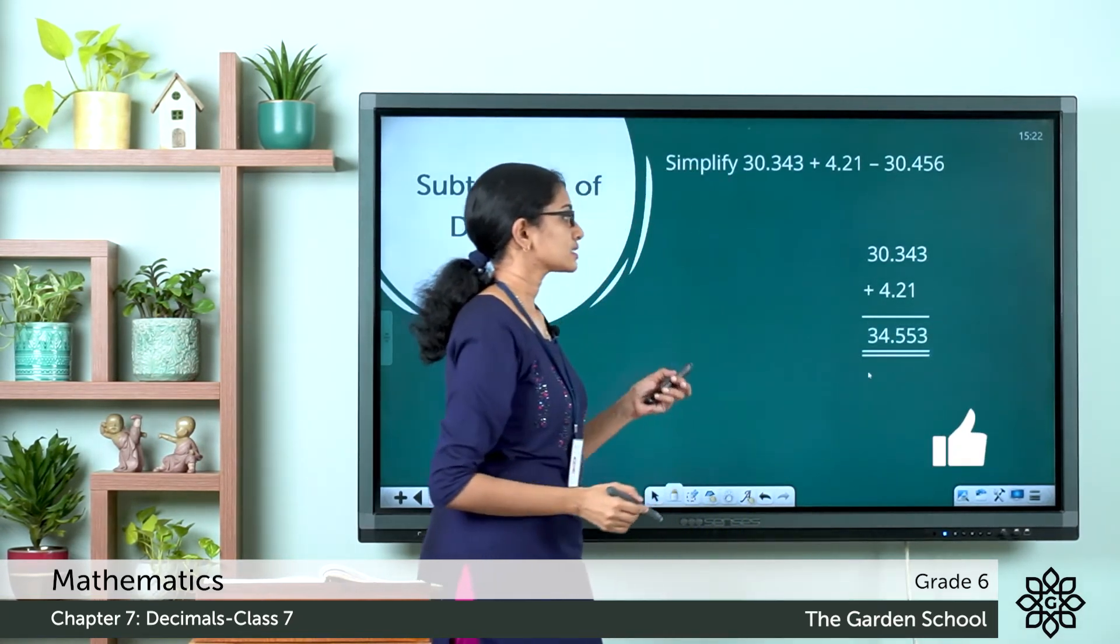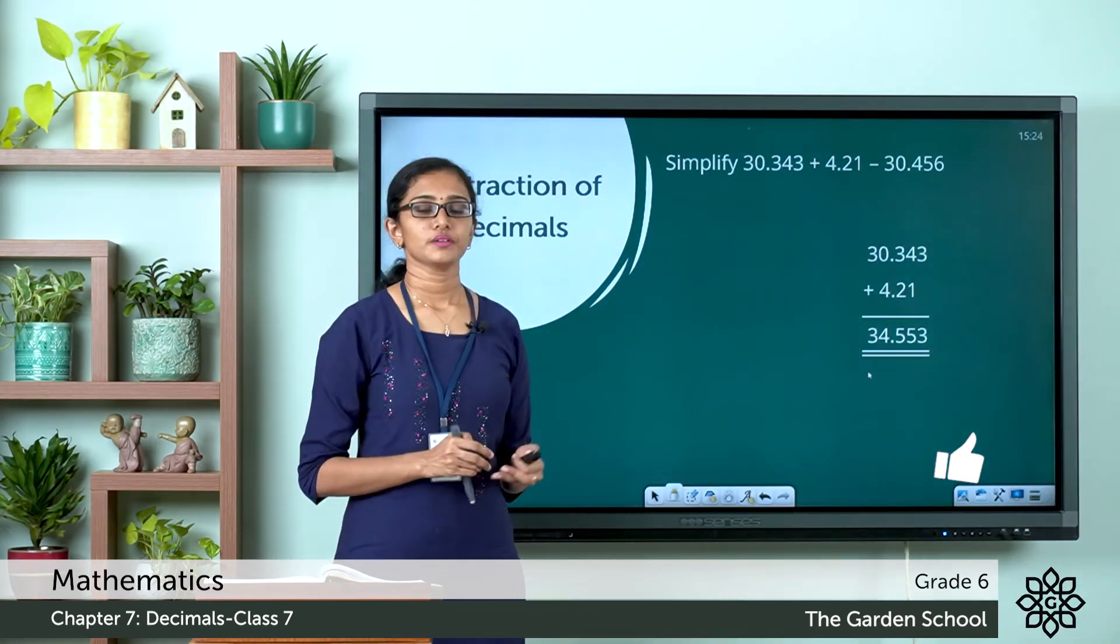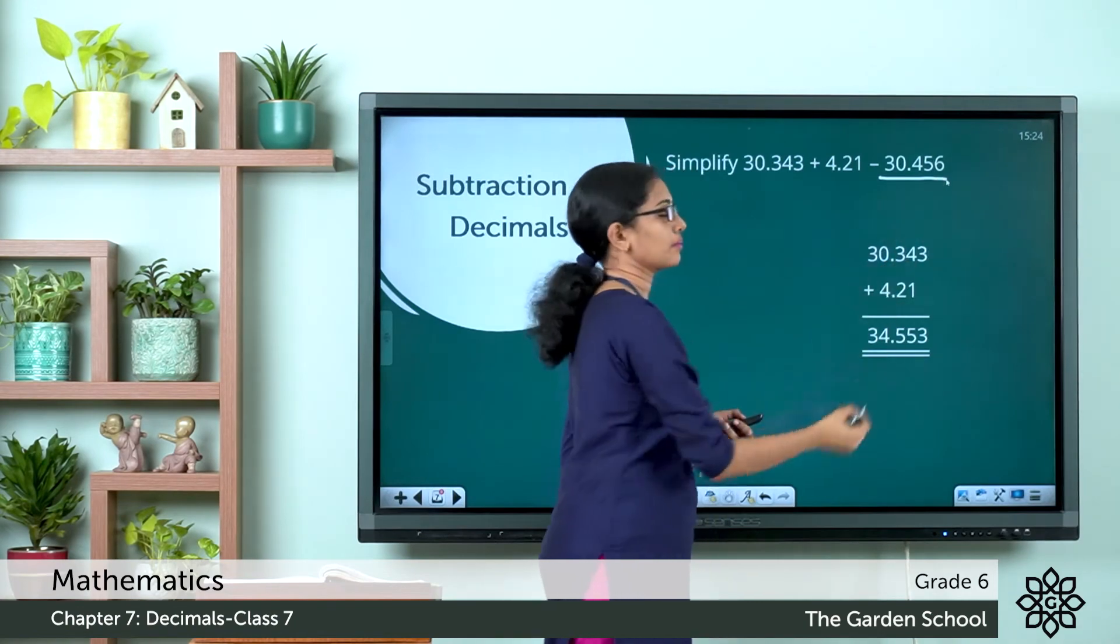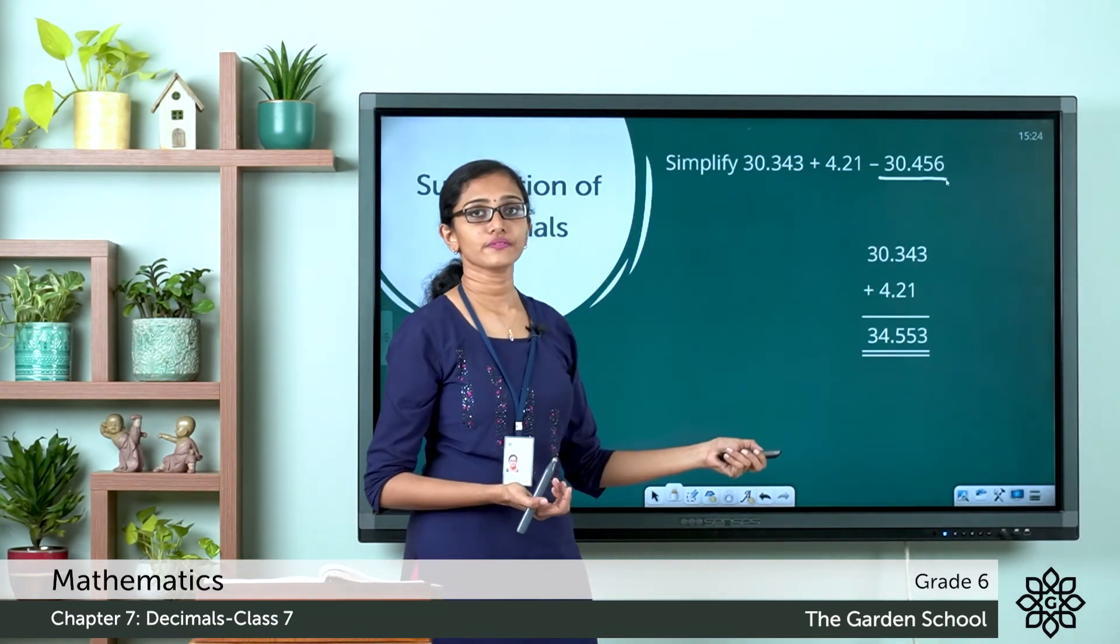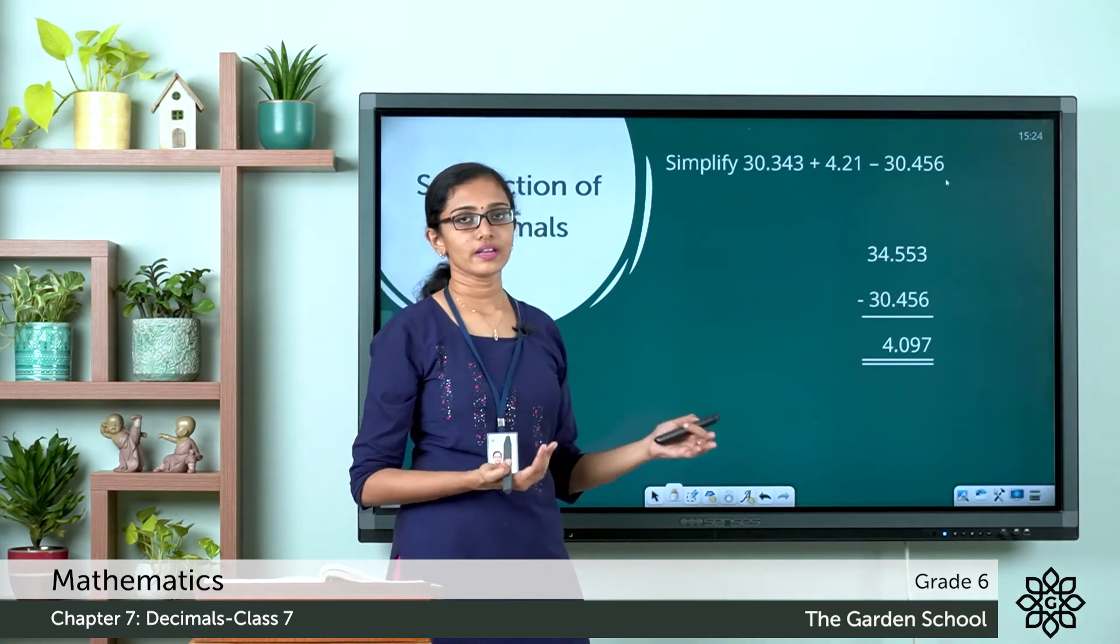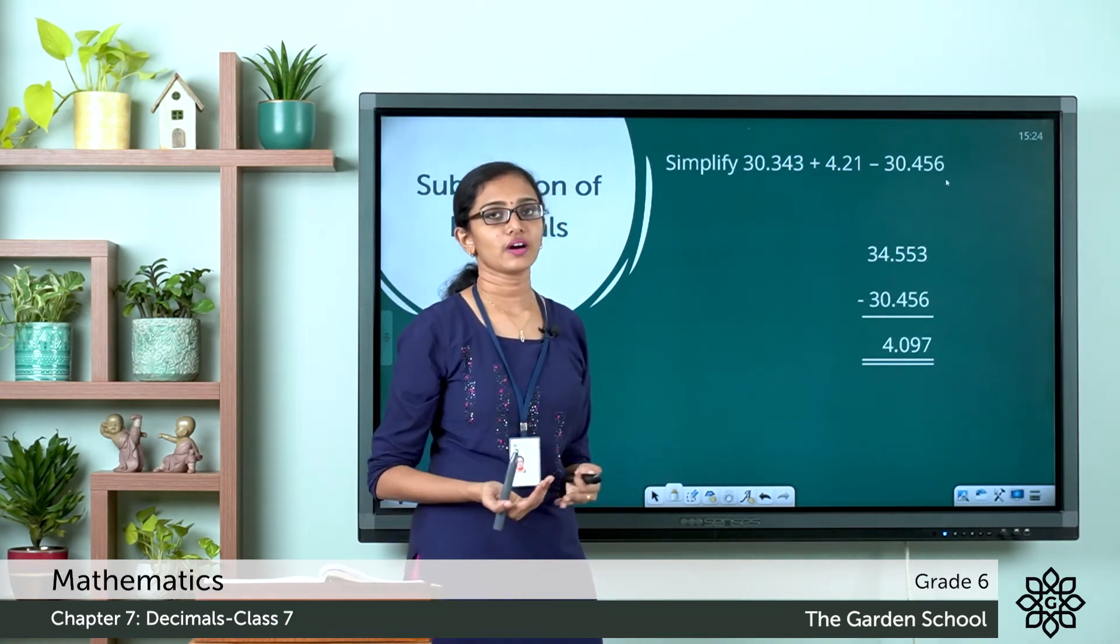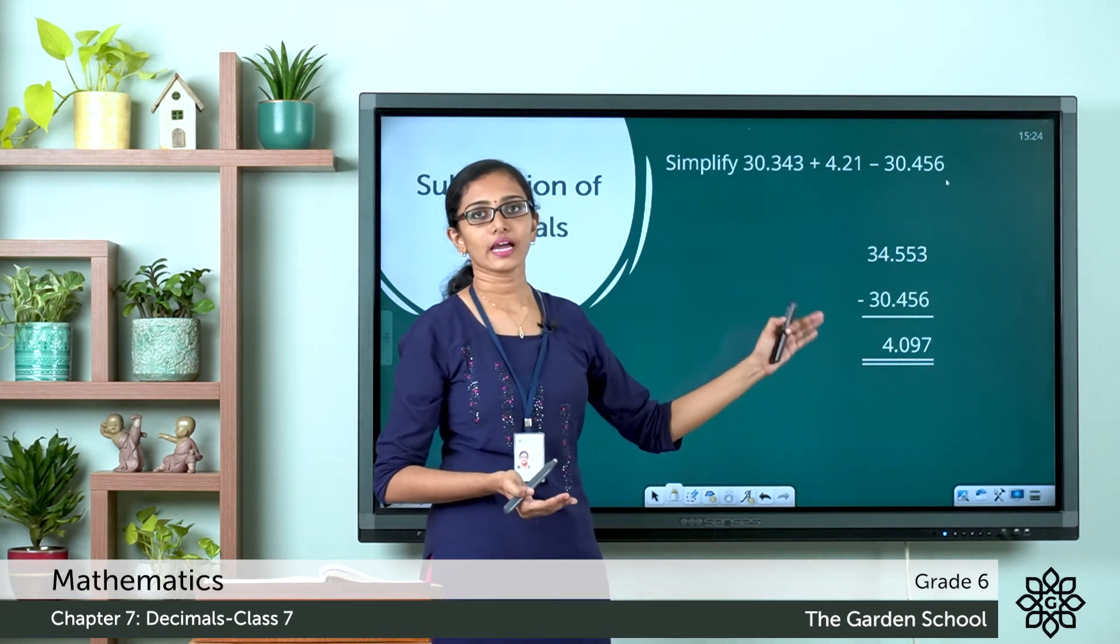So what is the sum? The sum is equal to 34.553. From this sum, we have to subtract the third number. So that is going to be 34.553 minus 30.456 and that will give you the difference 4.097.